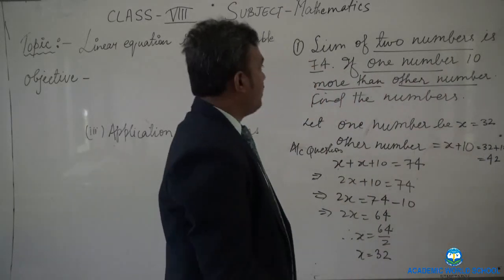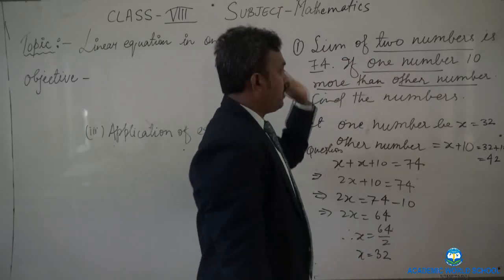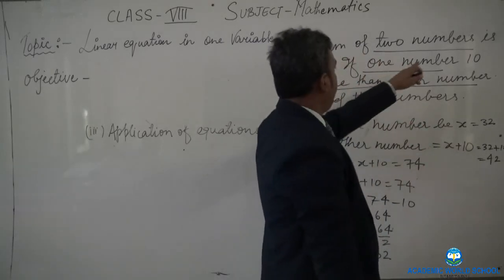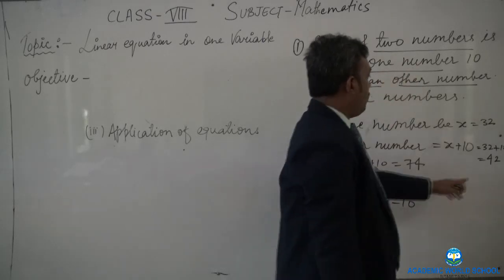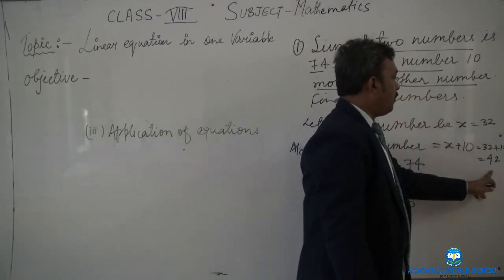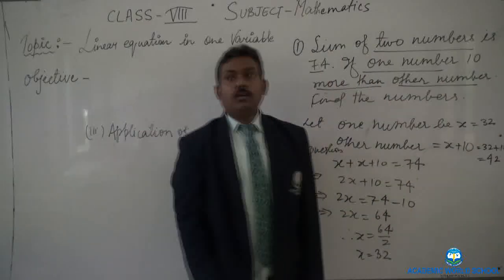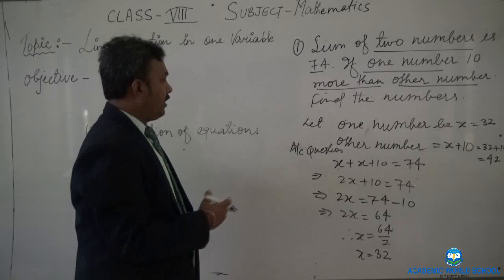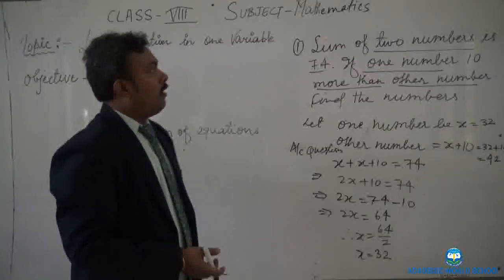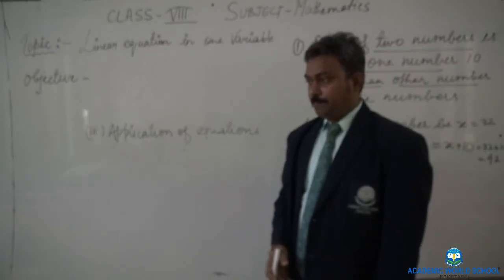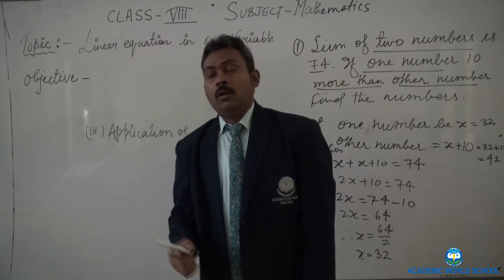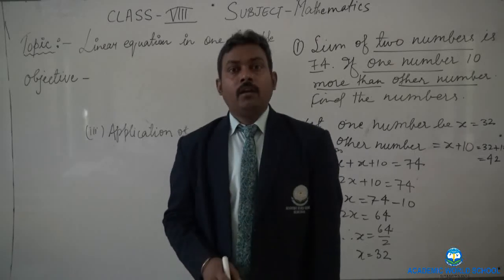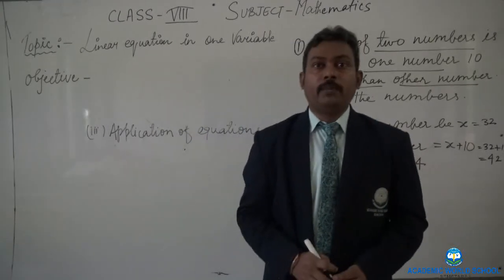To verify: 32 + 42 = 74 ✓, and 42 is 10 more than 32 ✓. Both conditions are satisfied. You will use this method to solve application-type word problems. We will talk more in our next class. The assignment related to this topic is uploaded on the ERP — please do it and send your queries through the ERP. Thank you.